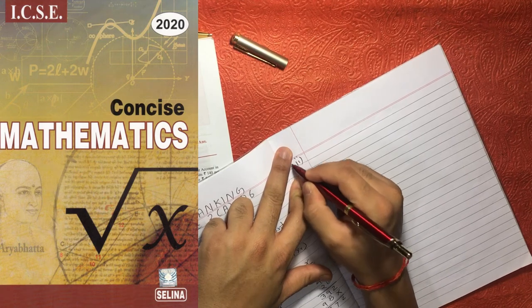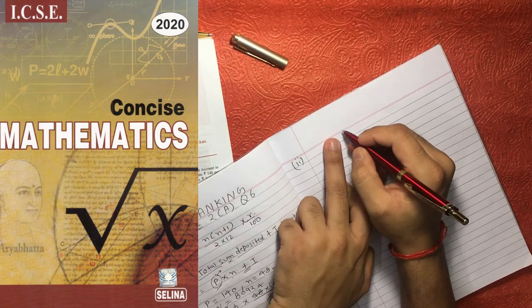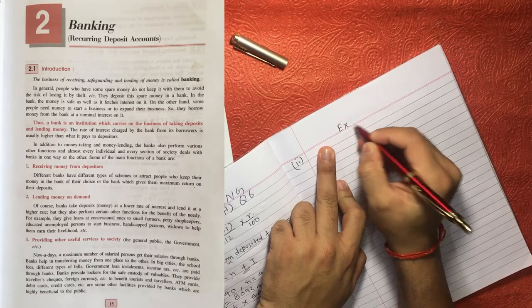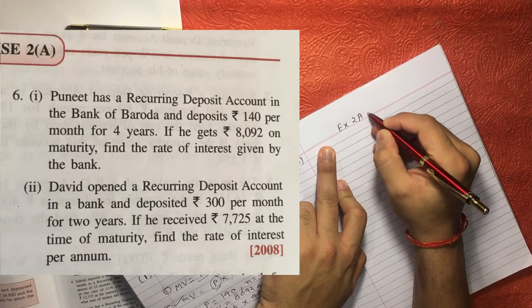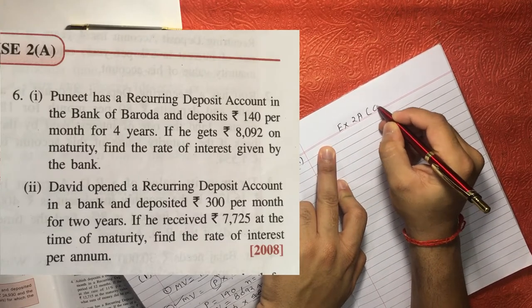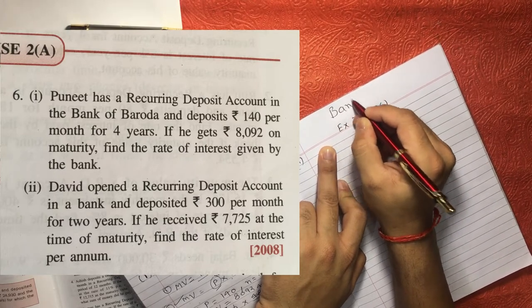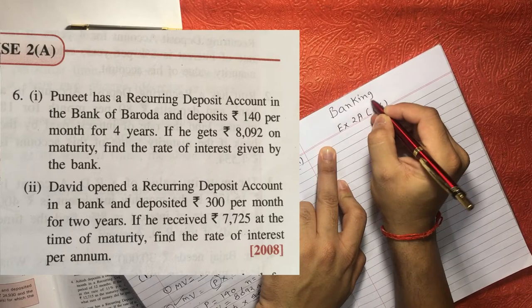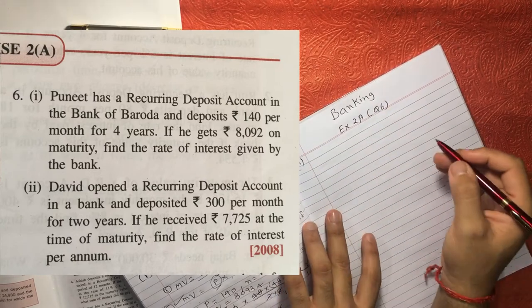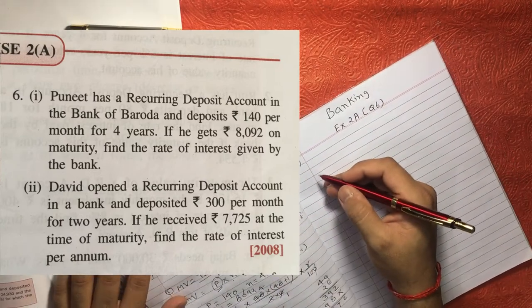This is part number 2. I am just writing again Exercise 2A, question number 6, and the chapter is Banking. I am just writing again because once I share this sheet with you, there should be no confusion.